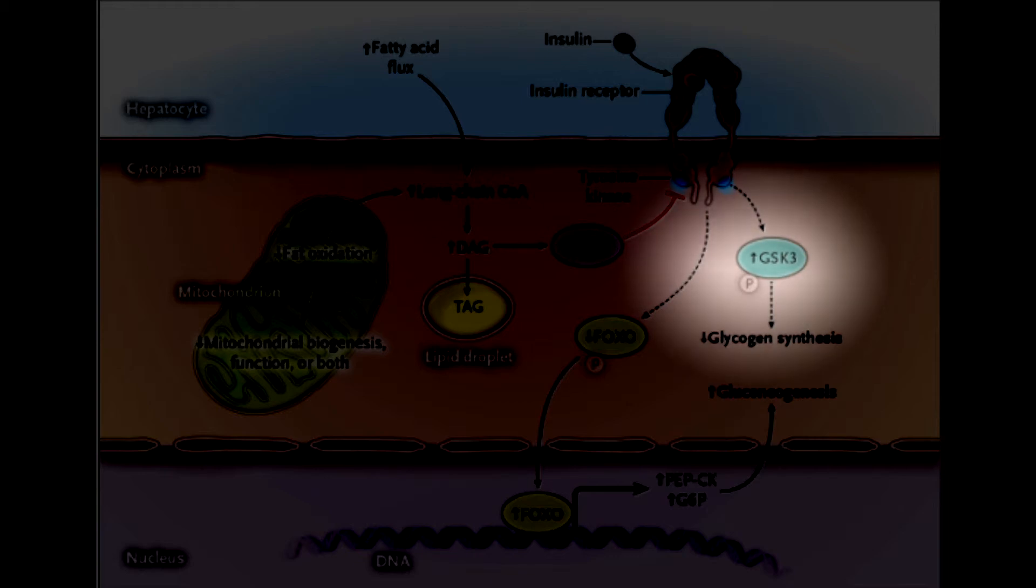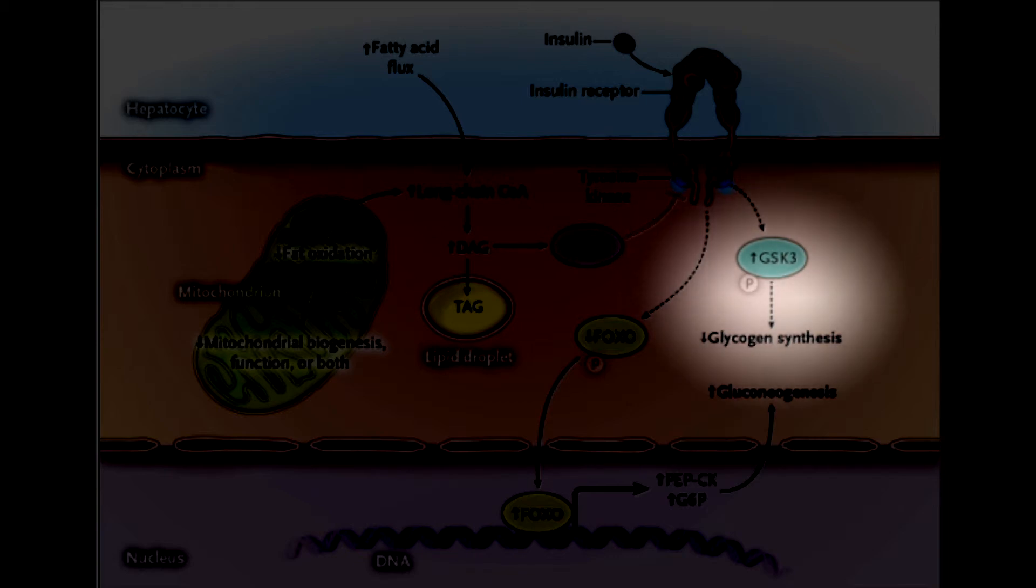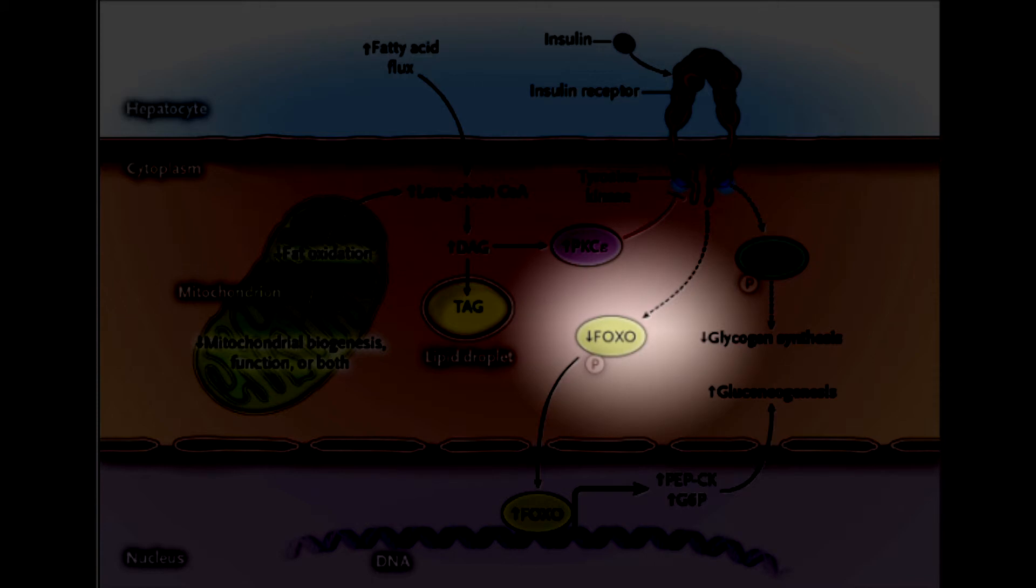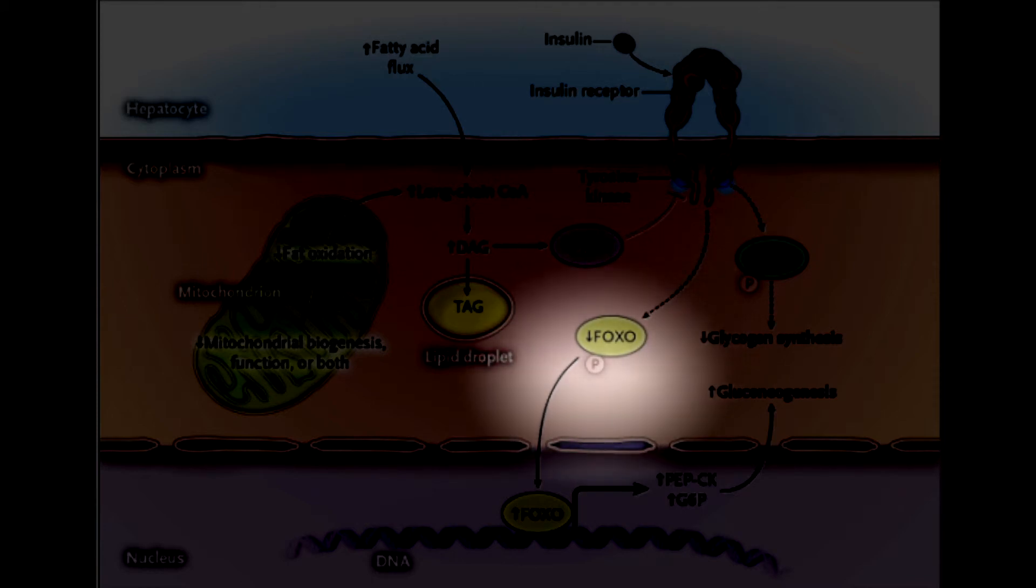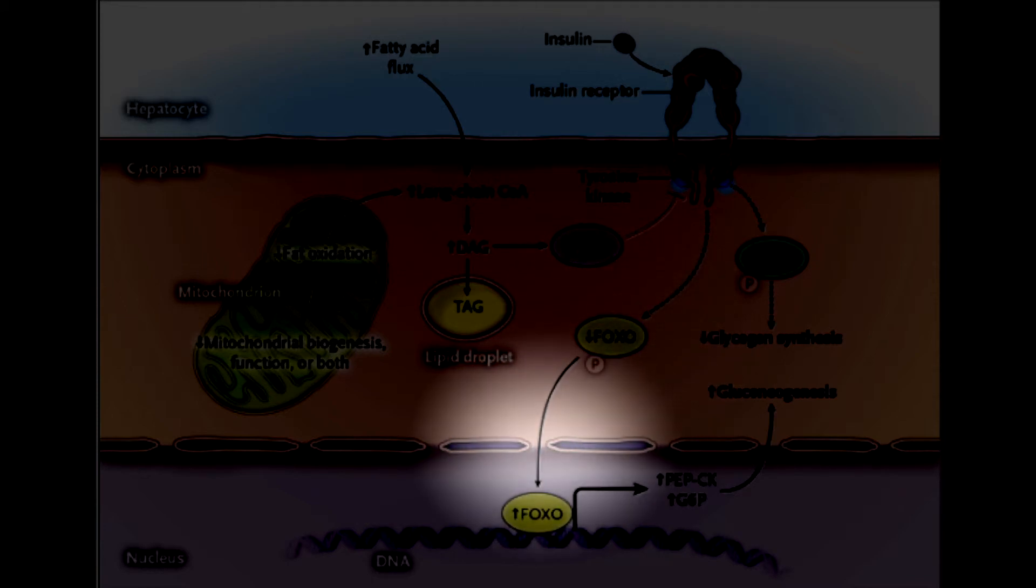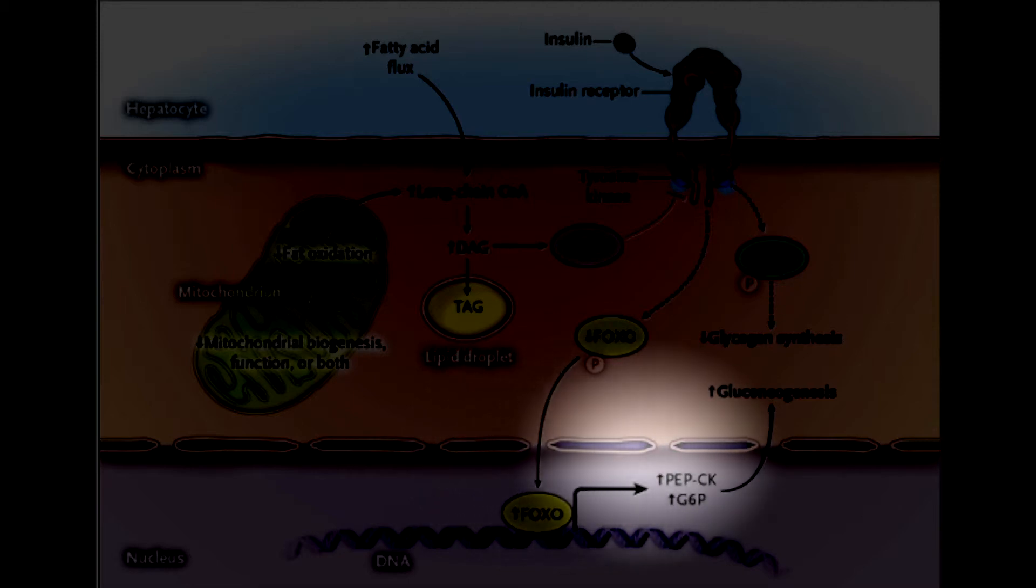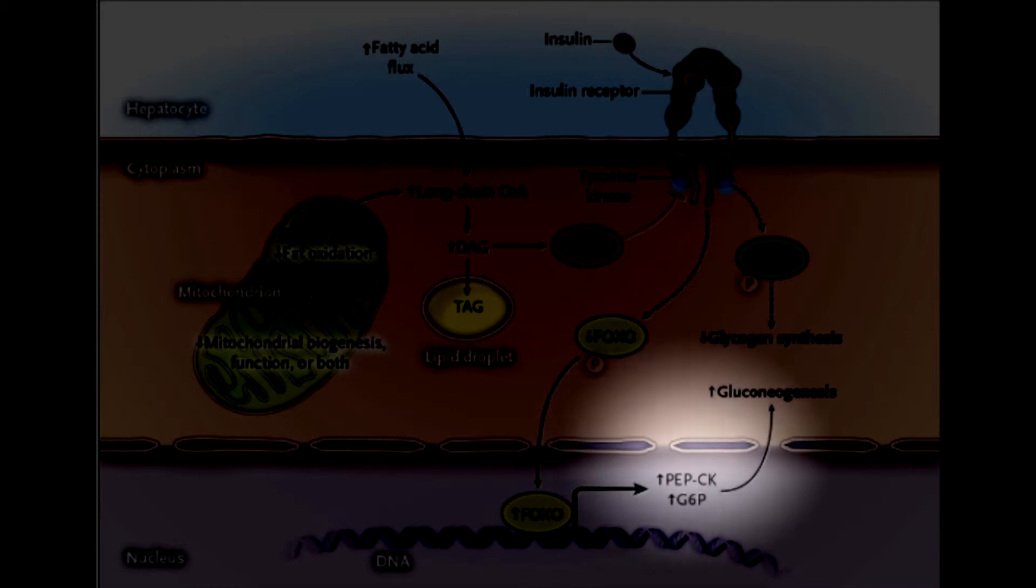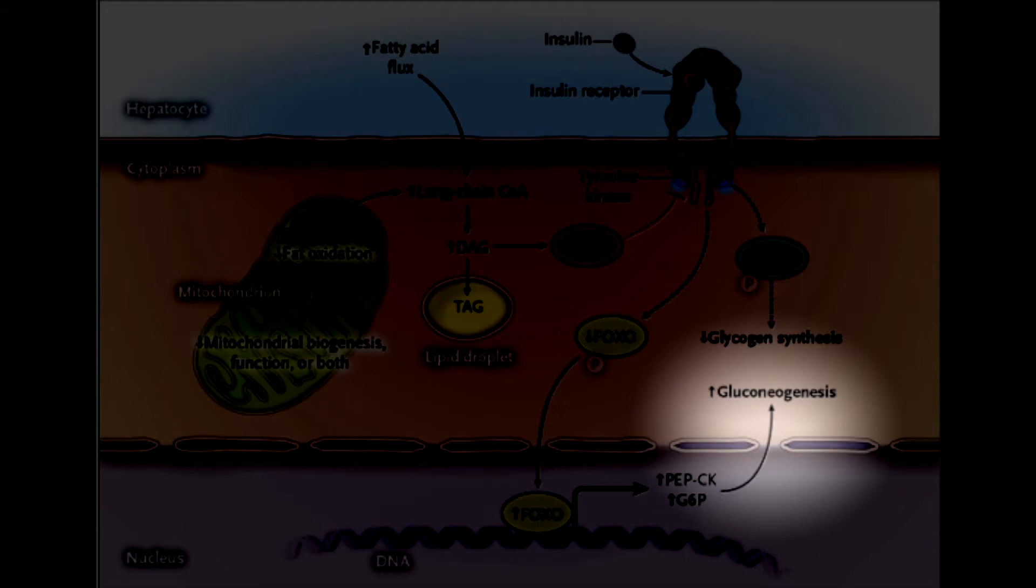This leads to a domino effect, leading to decreased glycogen synthesis. FoxO are transcription factors, or proteins, that tell the DNA to produce certain insulin proteins off of the DNA blueprint. These proteins lead to increased glucose release from the liver cell.